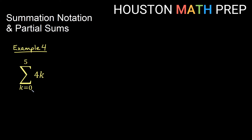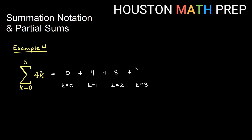For our last example, notice that the lower limit is starting at zero, not one. Oftentimes sums start at one, but that's not always the case — always pay attention and don't assume you're starting at one. Here with 4k from k equals 0 to 5: plugging in 0 gives 0; k equals 1 gives 4; k equals 2 gives 8; k equals 3 gives 12; k equals 4 gives 16; and k equals 5 gives 20. Adding all of those up gives us 60.